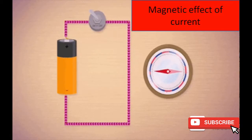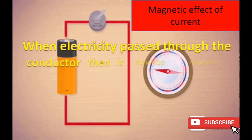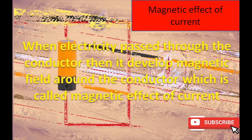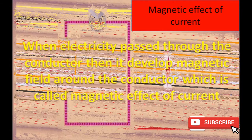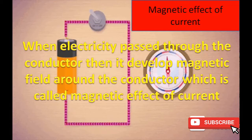Magnetic effect of current: when electricity passes through the conductor, it develops a magnetic field around the conductor, which is called the magnetic effect of current.